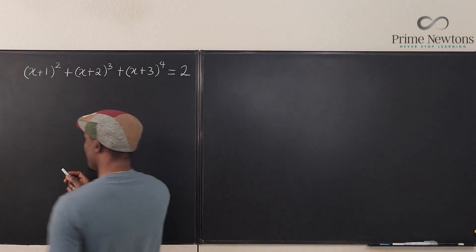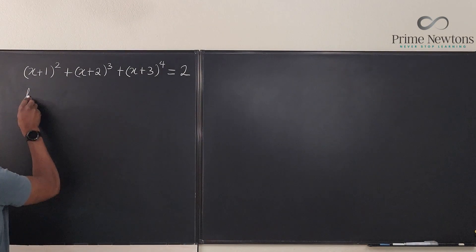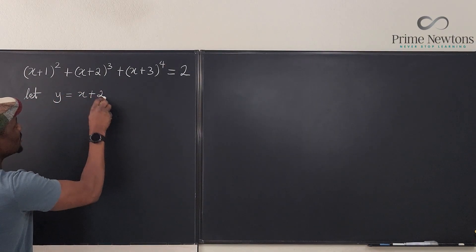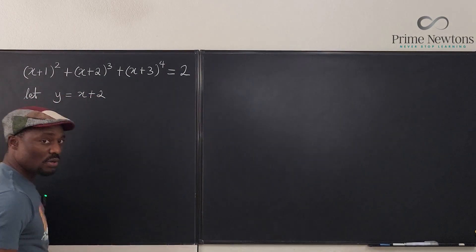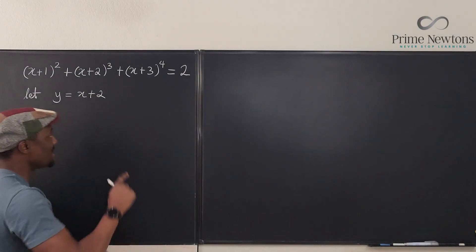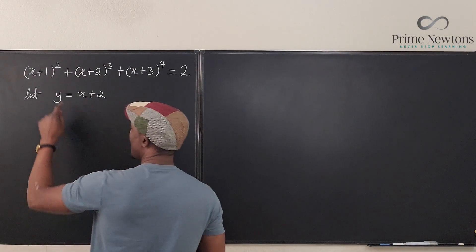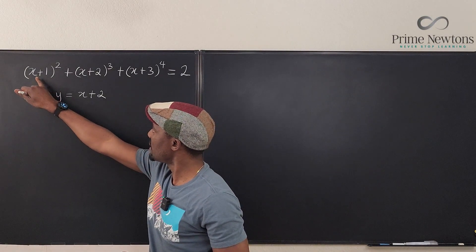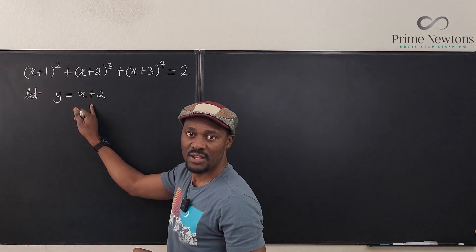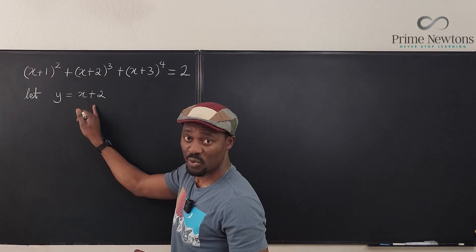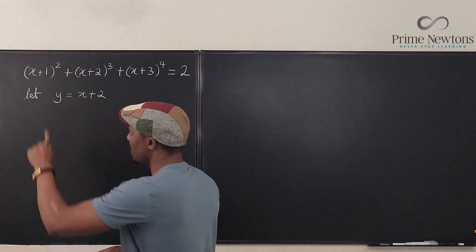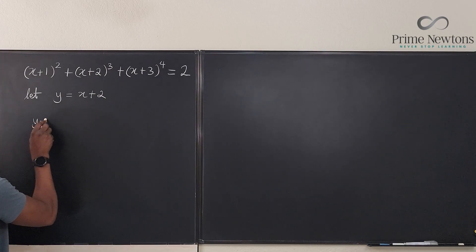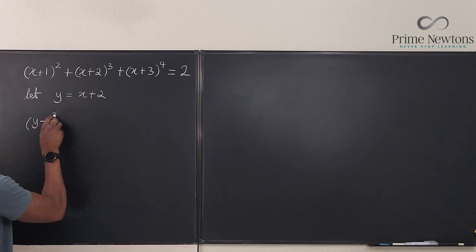Let Y be equal to x plus 2. It is important that we know what Y is — Y is x plus 2. But if you look at the first term, it is x plus 1, which is one less than x plus 2. You have to subtract one from Y to get that term. So that term is (Y minus 1) squared.